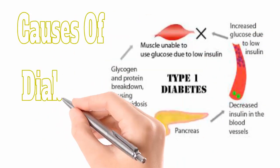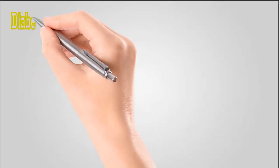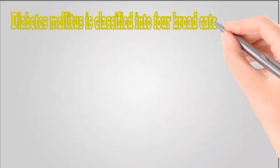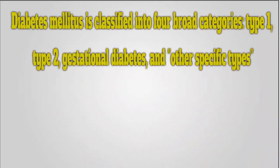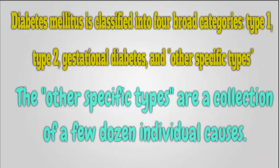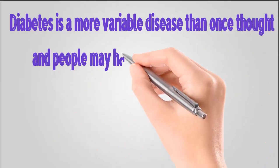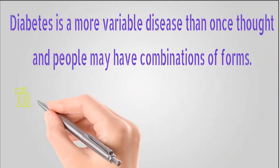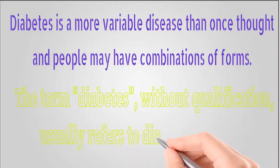Causes of diabetes mellitus: diabetes mellitus is classified into four broad categories — type 1, type 2, gestational diabetes, and other specific types. The other specific types are a collection of a few dozen individual causes. Diabetes is a more variable disease than once thought, and people may have combinations of forms. The term diabetes without qualification usually refers to diabetes mellitus.